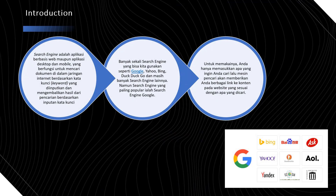Secara umum, Search Engine itu adalah aplikasi berbasis web. Selain berbasis web, dia bisa berbasis desktop atau mobile—mobile di HP atau tablet—yang berfungsi untuk mencari dokumen di dalam jaringan internet berdasarkan kata kunci atau keyword yang kita inputkan. Ketika kita mengetikkan kata kunci, maka di situlah Search Engine berfungsi. Kalau tidak ada yang kita ketikan, maka Search Engine tidak berfungsi.